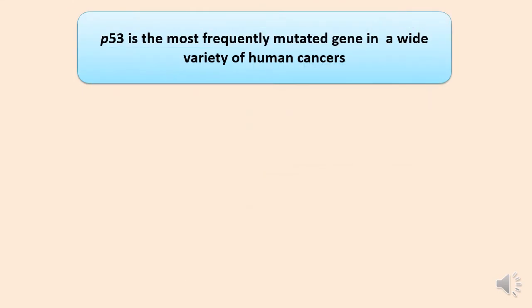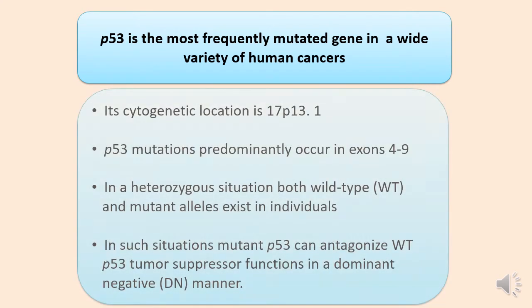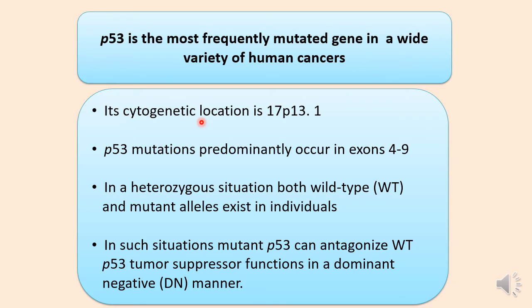Out of the human genes, the p53 gene is very important because it's the most frequently mutated gene in oral cancer. Let's look at a very simple description of this gene. In order to understand the first statement in this description, you have to have an idea about the location of genes on chromosomes.